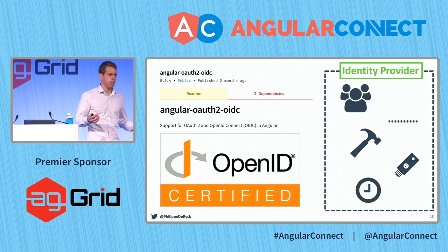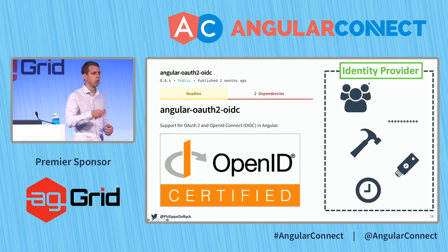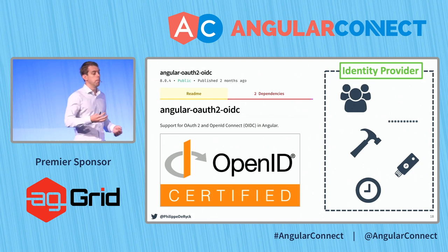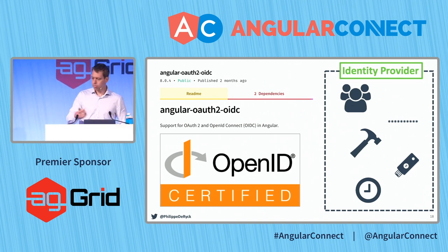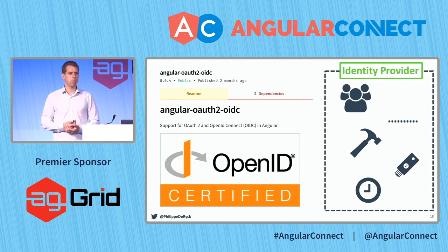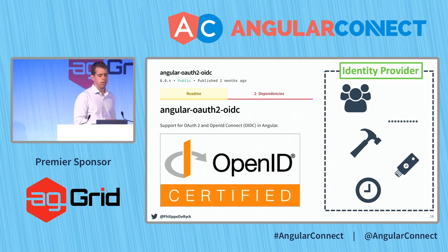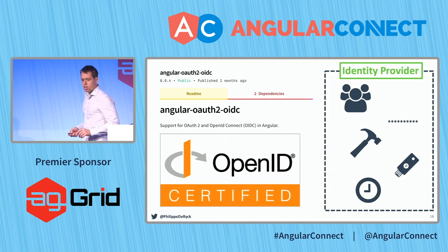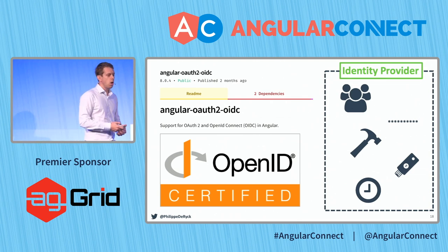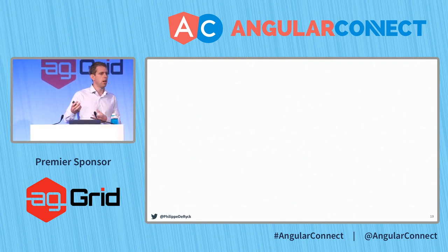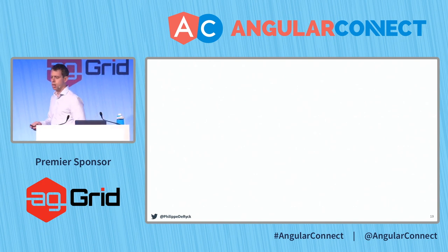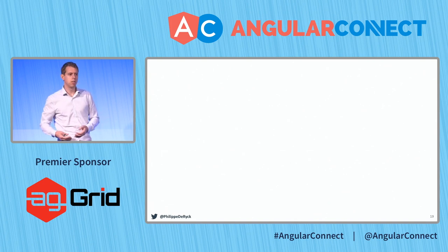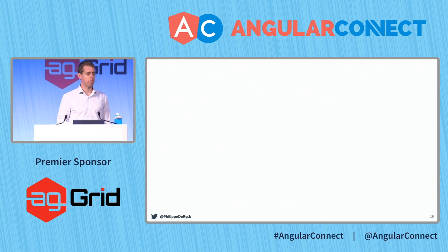Use something like OpenID Connect, which allows your Angular application to rely on an identity provider that handles all of that. If you use 'Login with Google', Google will be responsible for handling all of it. You don't have to use a public identity provider — you can use internal products, buy identity provider products, deploy open source solutions, or use cloud-based private services. It's really recommended to go that route. There's a session right after mine about authentication in Angular from Auth0, which is highly recommended.